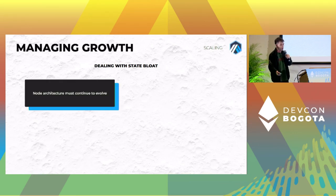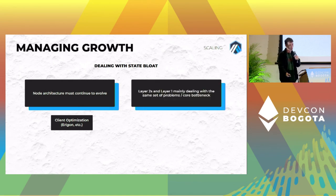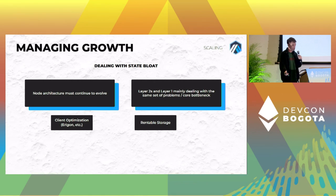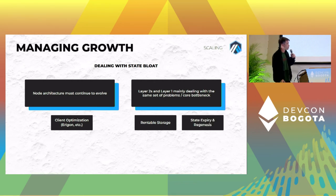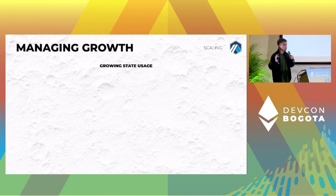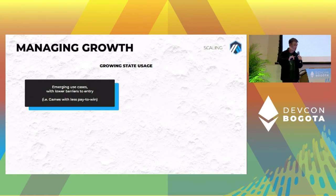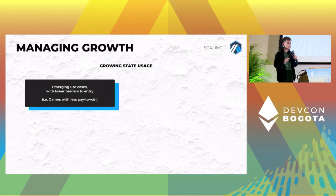State bloat is a problem. We're going to continually optimize for client performance. We're experimenting with rentable storage, and we've talked a lot about statelessness — there's still a lot of work to be done. In order for state bloat to be a problem, we need to get people to actually use blockchains outside of the canonical use cases we're comfortable with today. I'd like to see a lot more use cases come to market with lower barriers to entry.